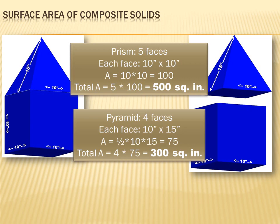Now let's deal with the pyramid. I've got four faces in the pyramid — it's a four-sided base, so there are four lateral surfaces. There is no base because the base is going to sit down on that prism and be part of the interior. The area of each of those faces would be one-half times the base times the height: one-half times 10 times 15, so each face is 75 square inches. There are four of them, giving a total of four times 75, or 300 square inches.